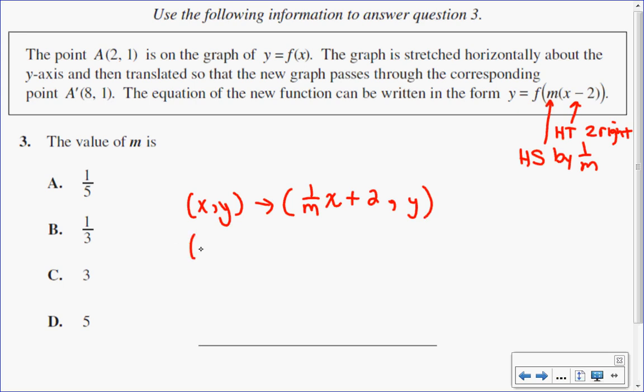So my original point (2, 1) will be translated to be (x/m + 2, y), which is (x/m + 2, 1). And I can see that my y value does in fact stay the same. So if I end up having this value here equaling 8, let's figure out what m would be.